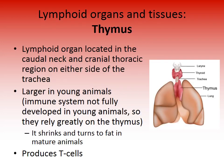The thymus is a lymphoid organ located in the caudal neck and cranial thoracic region on either side of the trachea. It is much larger in young animals because their immune system is not fully developed, and they rely heavily on the thymus for immunity. In mature animals, the thymus shrinks and turns to fat, becoming completely obsolete. The thymus produces T cells.